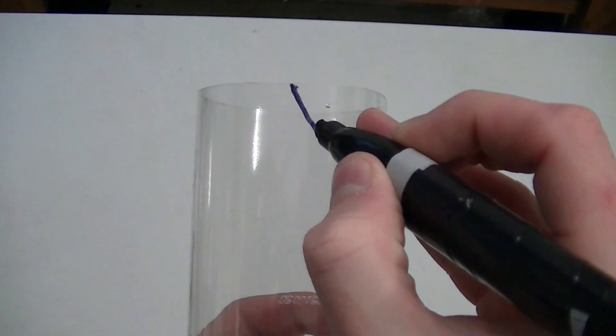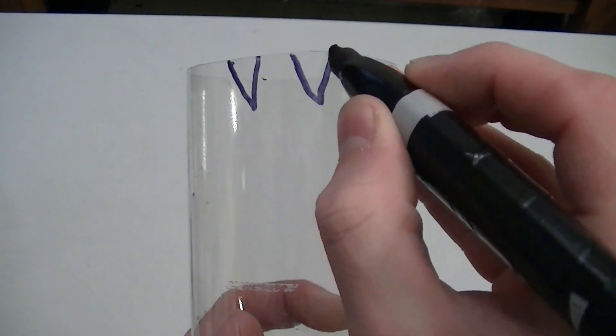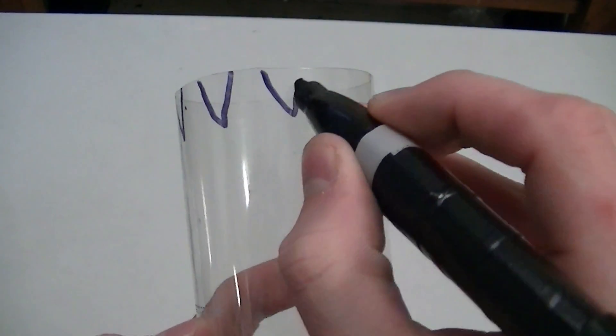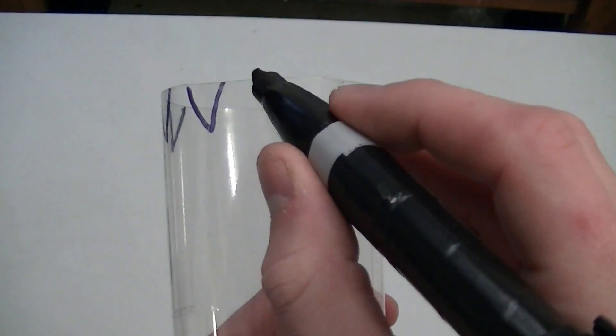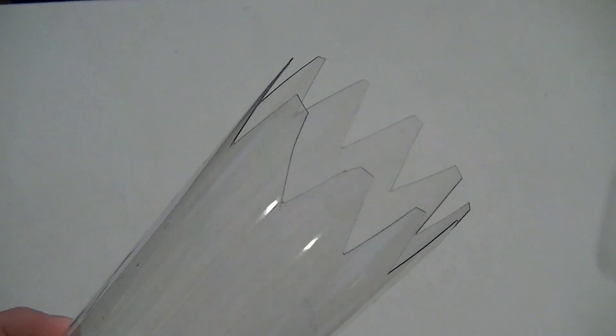Then, take a marker and draw several small triangles all the way around the end of the bottle we just cut. We suggest making these triangles an inch to an inch and a half long and about a half an inch wide. Then, cut out the triangles with scissors so the end of your bottle ends up looking like this.